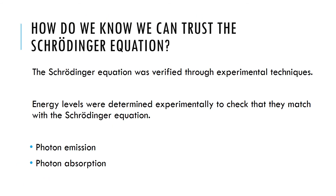Those are some things that come out of the Schrödinger equation — this idea of quantized energy levels, specifically for hydrogen as the simplest one-electron system. But how do we know that we can trust the Schrödinger equation? This is a very theoretical picture of the atom. The question is: is there any experimental evidence that verifies the mathematics from the Schrödinger equation? The answer is yes — these energy levels can be determined experimentally and we can check that they match the Schrödinger equation. There are two important experiments: photon emission and photon absorption.